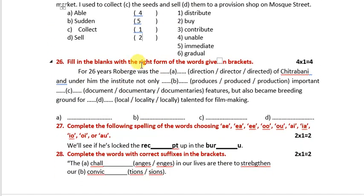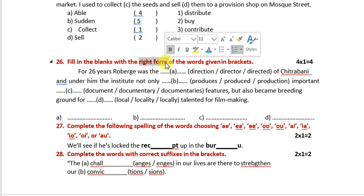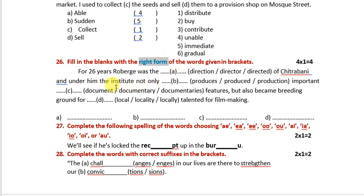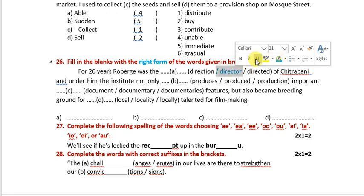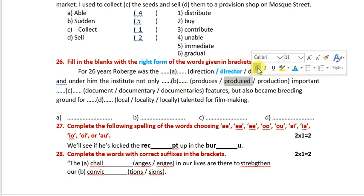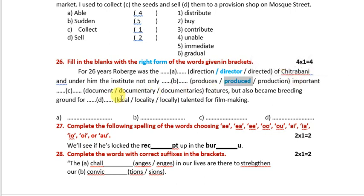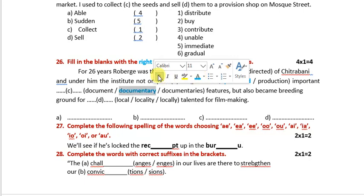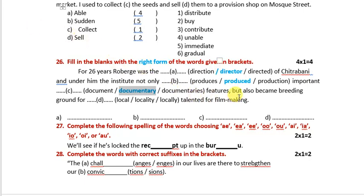Fill in the blanks with the right forms of the verb. 'For 26 years, Roberts was the director of Chitravani, and under him the institute not only produced important documentary features but also became a breeding ground of local talented filmmakers.'